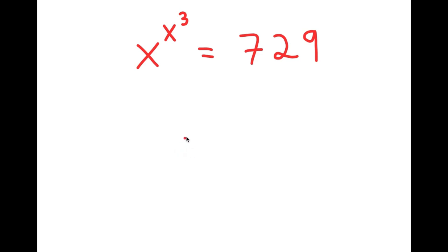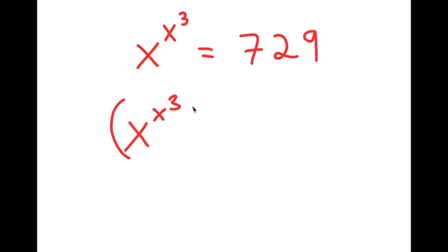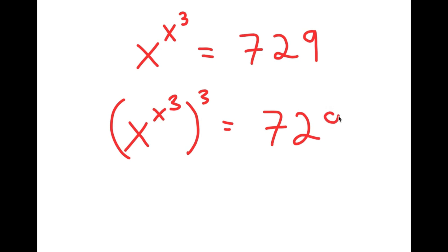To solve this, what I'm first going to do is take the power of 3 on both sides. So I get x to the power of x to the power of 3, to the power of 3, is equal to 729 to the power of 3.